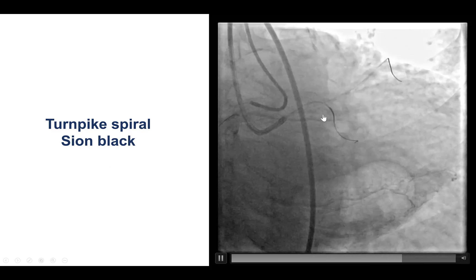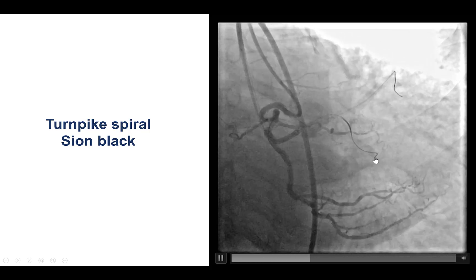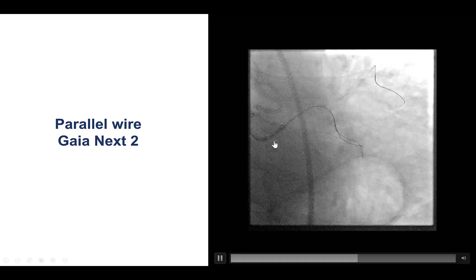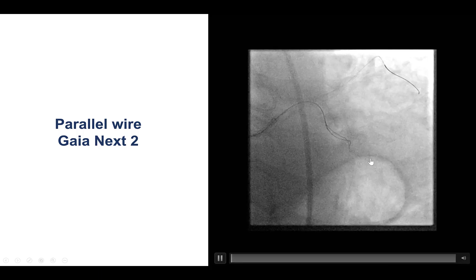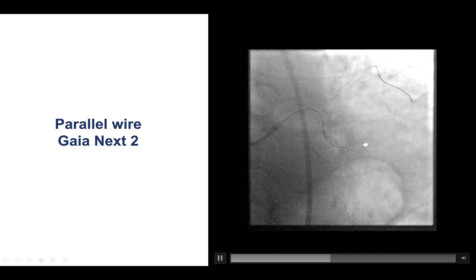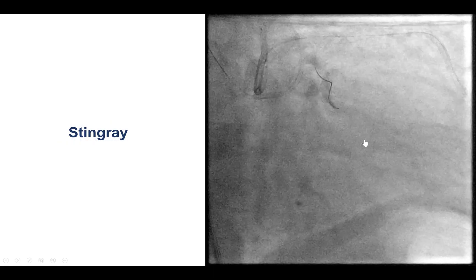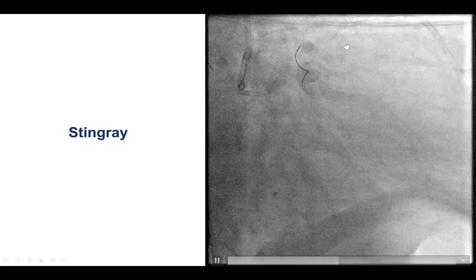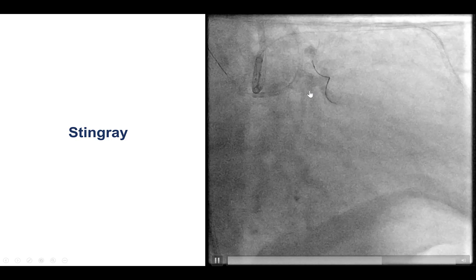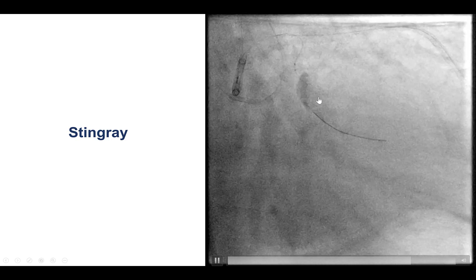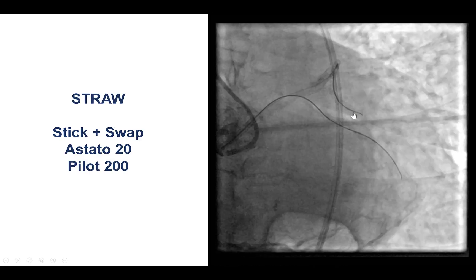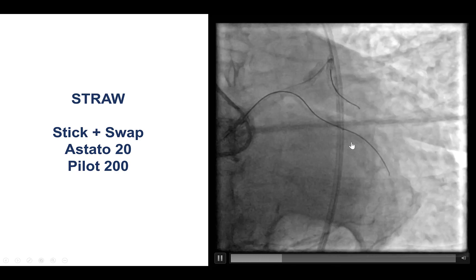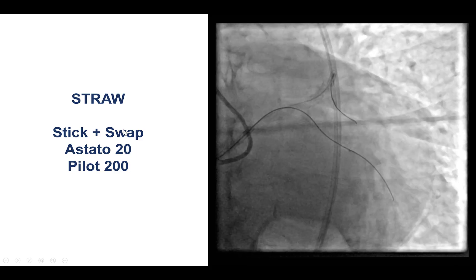A Turnpike Spiral catheter was used along with a Sion Black that went into the sub-intimal space. We tried parallel wiring using a Gaia Next guidewire, but despite attempts, we were unable to enter into the distal true lumen. We therefore decided to try re-entry, which involved delivering a Stingray balloon. Delivery of the Stingray was difficult; we had to advance the guidewire a little further distally. Then we were able to get the Stingray positioned, and after aspirating from the side port, we did the re-entry attempts using the stick-and-swap technique.